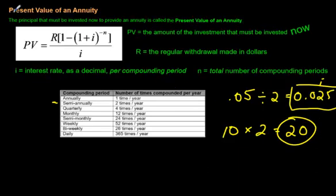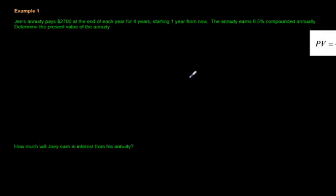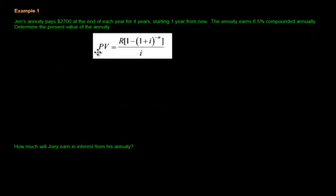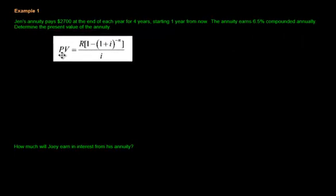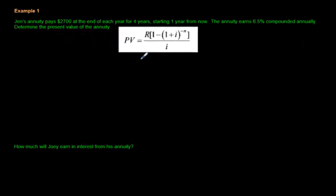Let's go to an actual question now. We're going to do two questions together and hopefully that's going to help you understand how to use this formula to find present value questions. I'm going to bring the formula over right away just so we have it right away. Let's read the question. It is small font here. I did that on purpose so I could squeeze it all on here. Jen's annuity pays $2,700 at the end of each year for four years, starting one year from now. The annuity earns 6.5% compounded annually. So the word is annually. Determine the present value of the annuity.